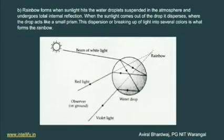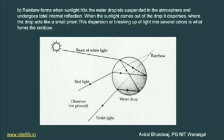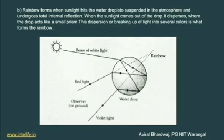The rainbow occurs due to three types of phenomena: dispersion, refraction, and total internal reflection. When water droplets in the atmosphere are hit by sunlight, first dispersion occurs, then reflection. According to the diagram, sunrays passing through the droplets reflect and disperse into the colors red, orange, and violet — the seven colors that form a rainbow. A rainbow forms when sunlight hits water droplets suspended in the atmosphere, causing total internal reflection, and the dispersion or breaking of light into seven colors.